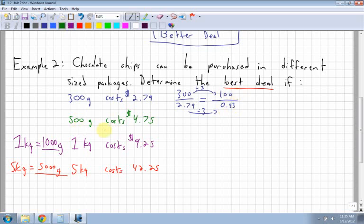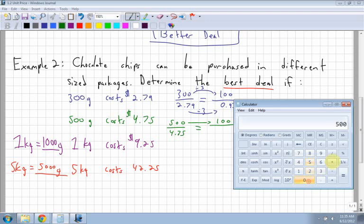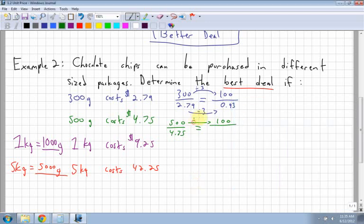The next one, I have 500 grams costs $4.75. So 500 grams for $4.75, what is the cost per 100? How do I get 100 from 500? Again, if you're unsure, just divide them. 500 divided by 100 is 5. Oh right, so I divide by 5.